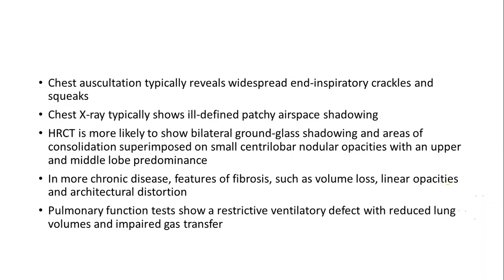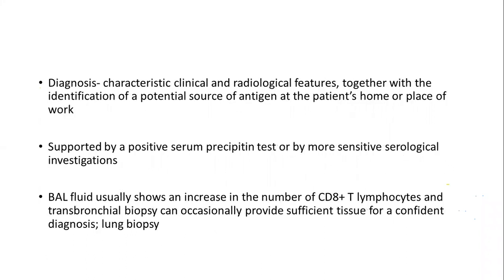On high-resolution CT, bilateral ground glass shadowing and areas of consolidation are seen, superimposed on small centrilobular nodular opacities with upper and middle lobe predominance. In more chronic disease, fibrosis leads to volume loss, linear opacities, and architectural distortion. Pulmonary function testing shows a restrictive ventilatory defect with reduced lung volume and impaired gas transfer. Diagnosis is usually clinical and radiological, together with identification of the potential antigen source at home or work — so history taking is very important.